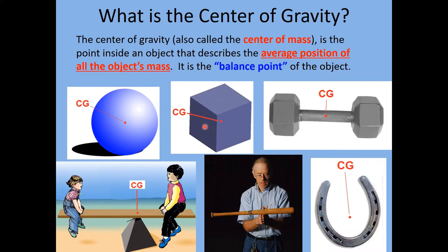For a cube, the center of gravity is a point right in the center of the box. For a dumbbell, the CG is right in the center of the handle — the average position of all the mass, with just as much mass to the left as to the right. For a balanced seesaw system, the heavier child is closer to the pivot than the lighter child, and if they are balanced, the CG is directly above the pivot point.